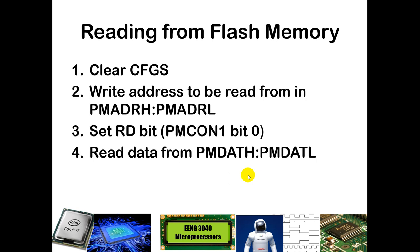To read from flash: first, clear the CFGS bit to indicate we are reading flash. Then write the address you want to read from into PMADRH and PMADRL, which act as a 16-bit address. Then simply set the RD bit — bit 0 of PMCON1. After a short time — about two instruction cycles — you can read the data back in PMDATH and PMDATL.